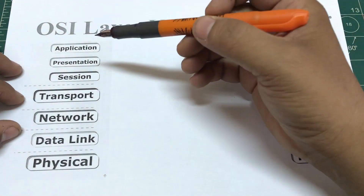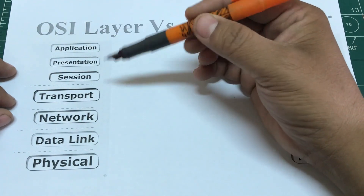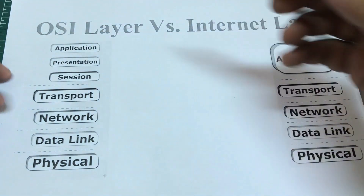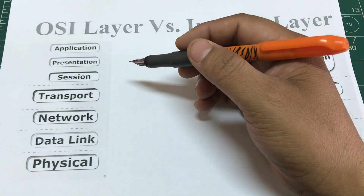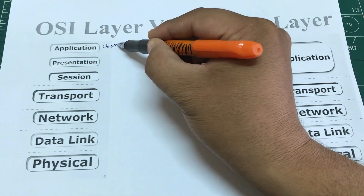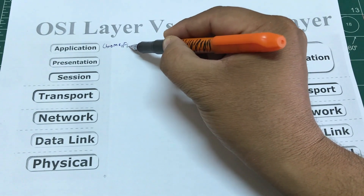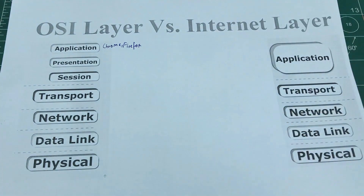Let's go over every single one of them one by one. The application layer basically refers to your browser — for example, it could be Chrome, Firefox, or Safari — anything that lets you browse the internet and get access to it.